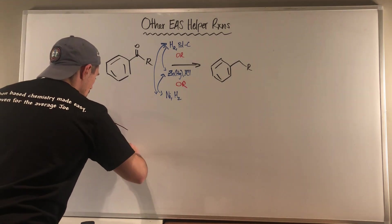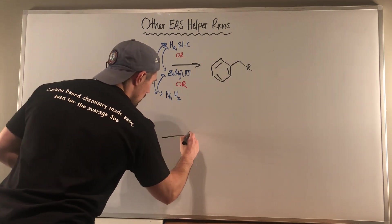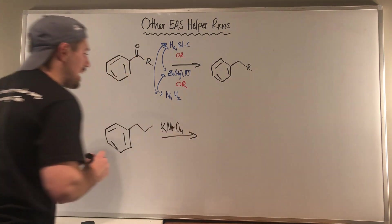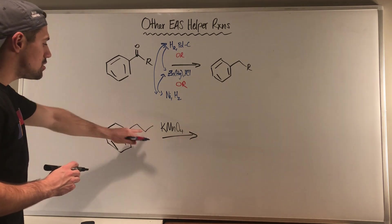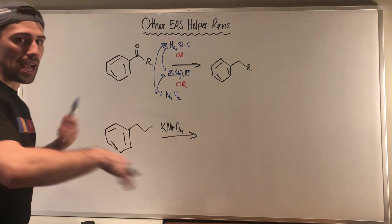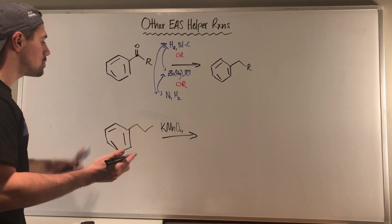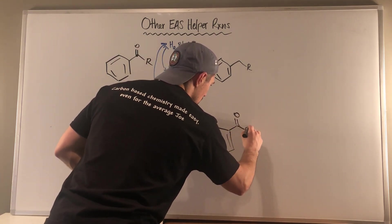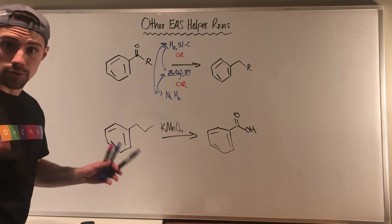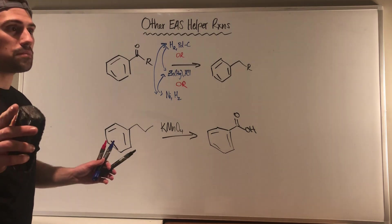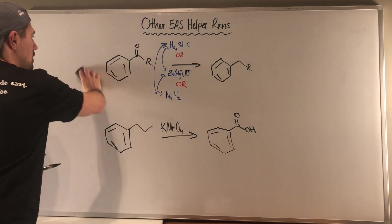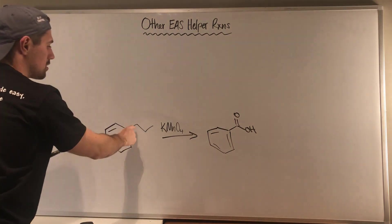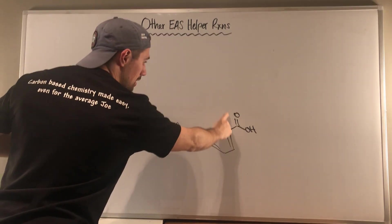Let's say for example you had some type of alkyl group off of your benzene ring. If you throw in something called potassium permanganate, KMnO4, what you do — it doesn't matter how many alkyl groups you have — is take those alkyl groups and just transform them into carboxylic acids. There's a mechanism, but I've never encountered any teacher that's made someone learn that mechanism. I want to show you some more examples of using this potassium permanganate oxidation — it's an oxidation because we're taking something with zero oxygens and making it bonded to two.